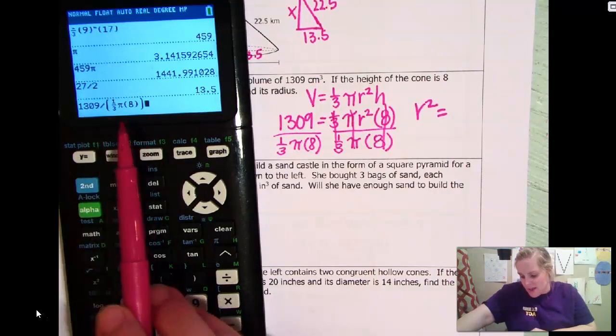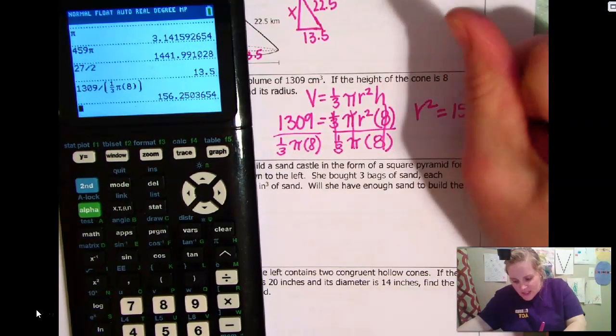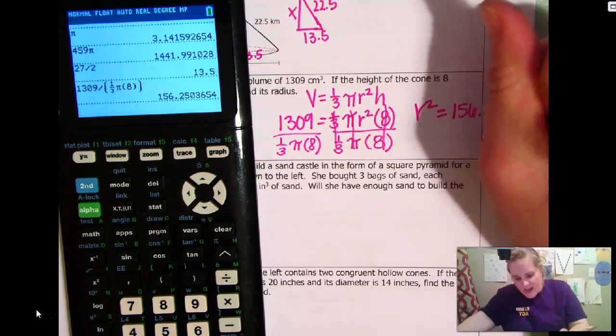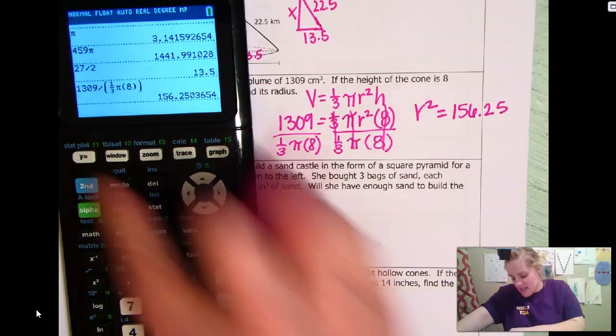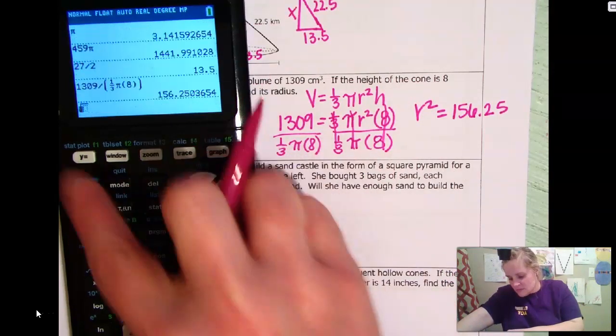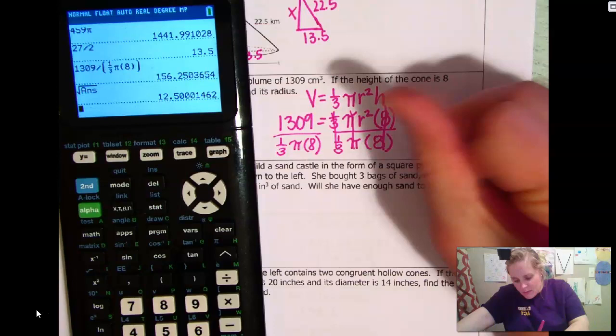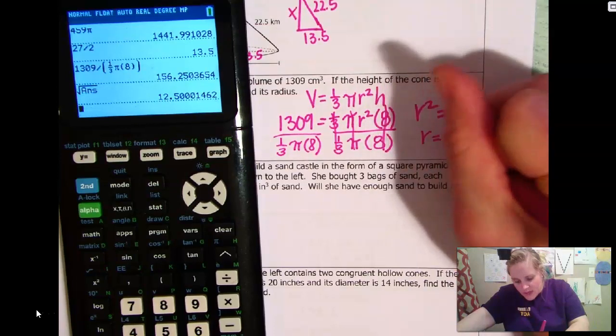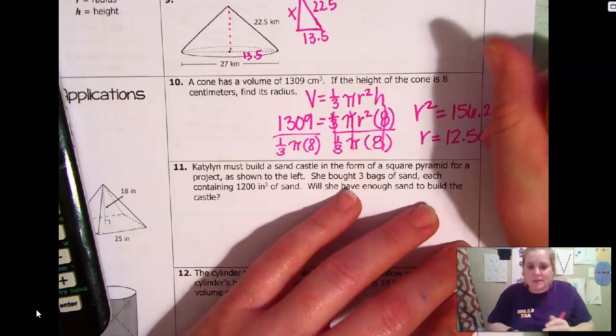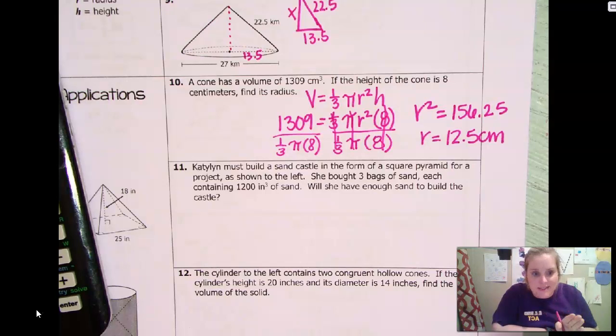1,309 divided by, I'm going to put this in parentheses so my calculator doesn't mess it up, 1,309 times pi times 8. And double close my parentheses. I did that so that this would be divided by all of that. Okay? I didn't want my calculator to make a mistake. And so that gives me 156.25. And then I have to take the square root of that, which is going to give me a radius of 12.5. And it will just be centimeters because a radius is not to the second power and it's not to the third power. It's just a measurement. So it's just centimeters. Okay?